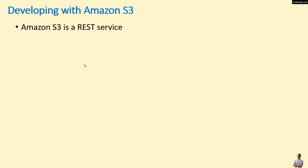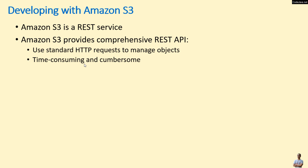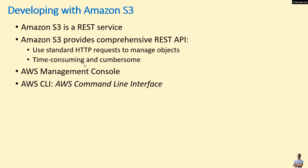From a developer's perspective, Amazon S3 is a REST service that provides a comprehensive REST API, meaning you can use standard HTTP requests to manage objects in Amazon S3. However, using the Amazon S3 REST API directly is time-consuming and cumbersome. For managing objects in Amazon S3, you can use the AWS Management Console or the AWS Command Line Interface.